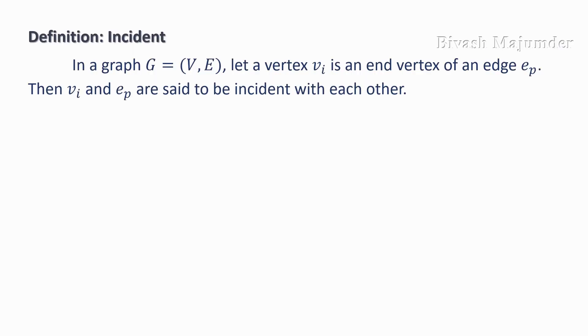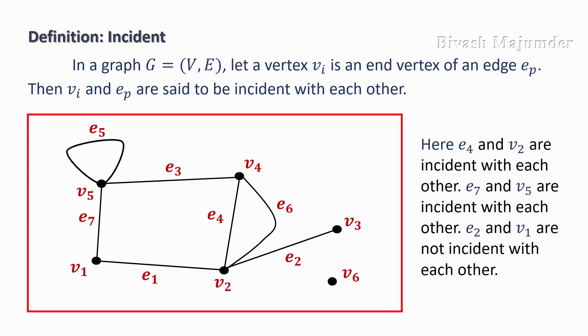Let us begin with the definition of incident. In a graph G = (V, E), let a vertex vi be an end vertex of an edge ep. Then vi and ep are said to be incident with each other.